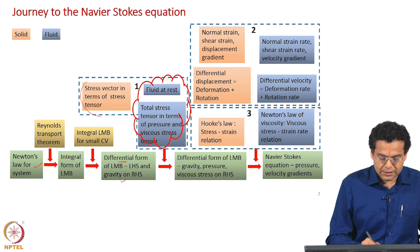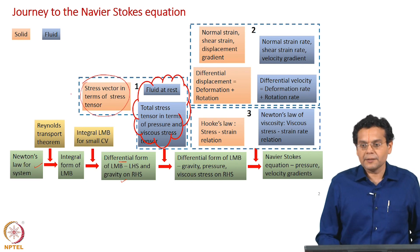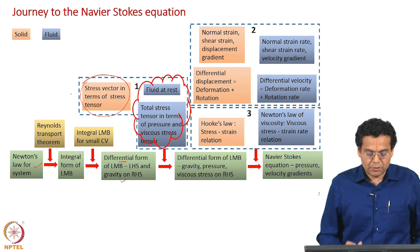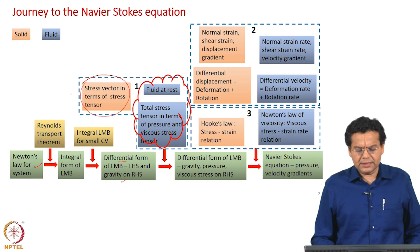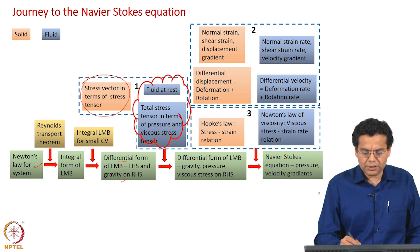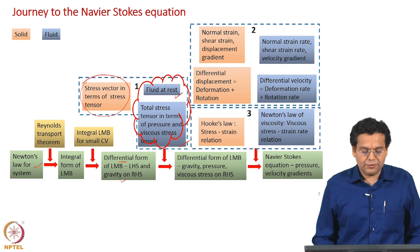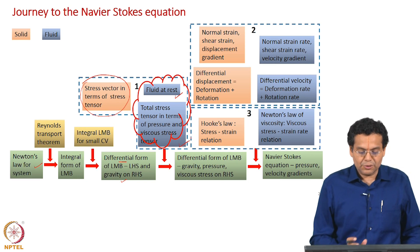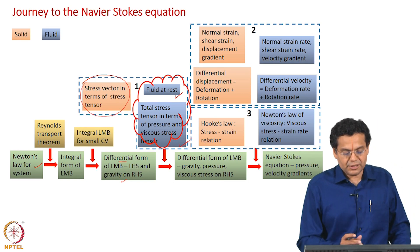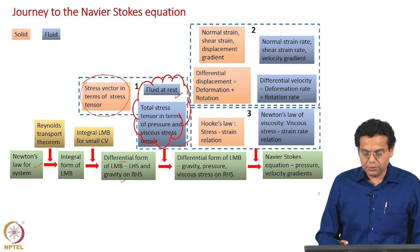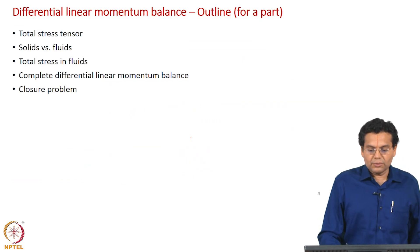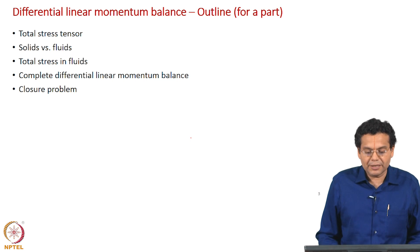Now this block is clear to us. We discussed stress vector, we discussed stress tensor, and also the relationship between these two, and we looked at properties of stress tensor. Now that is the block in orange. Let us move to the two blocks shown in blue color which are applicable for fluids. We should know that in terms of our journey to the Navier-Stokes equations, we are in this highlighted portion. Once we do that we will be able to complete the differential form of linear momentum balance.